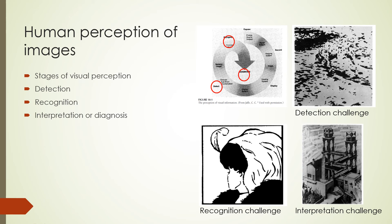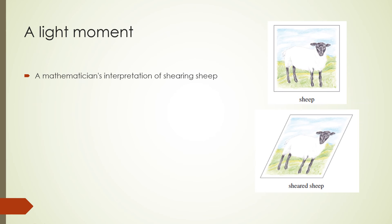Look at the top right figure. What do you see? This first challenge is about detection. Look at the bottom left image. What do you see? This image is about recognition. In the last image on the bottom right, what do you see? How would you interpret what you see? Here is a light moment before we get into observer performance. This slide is also about interpretation. A mathematician's interpretation of shearing sheep may be different from what a sheep farmer thinks.